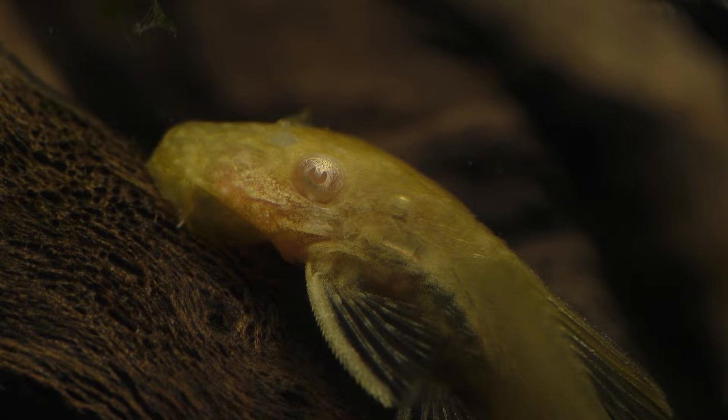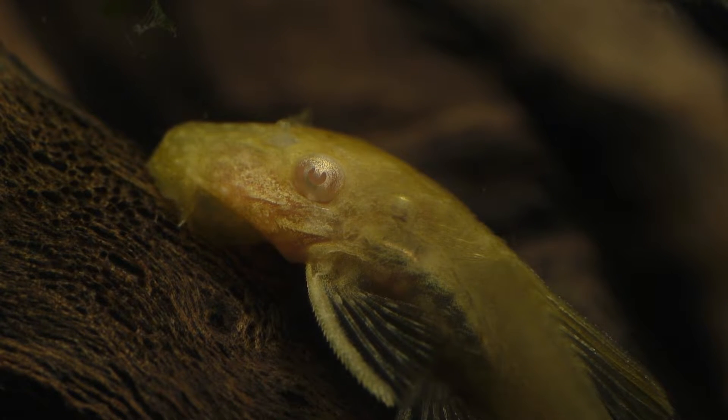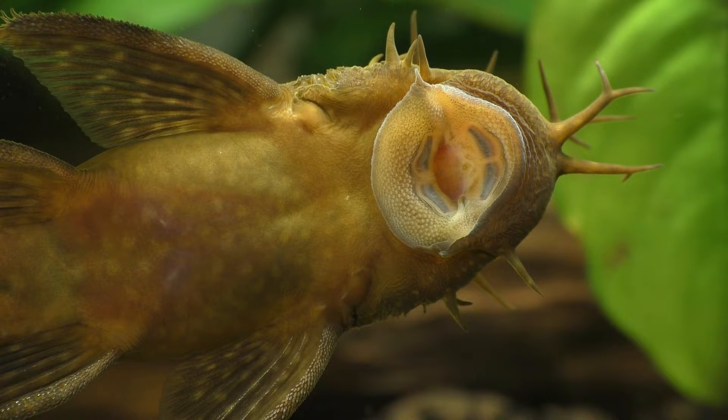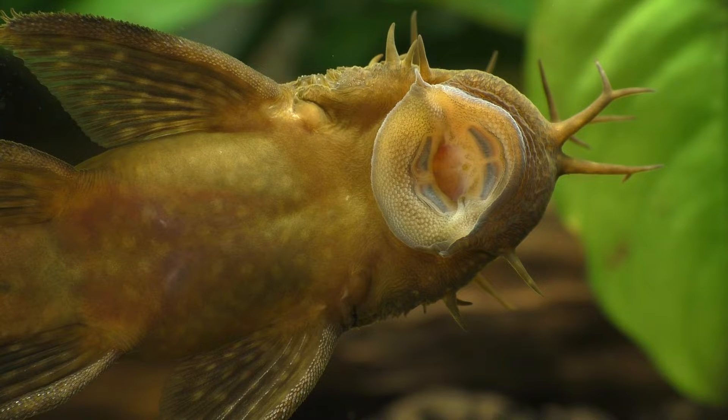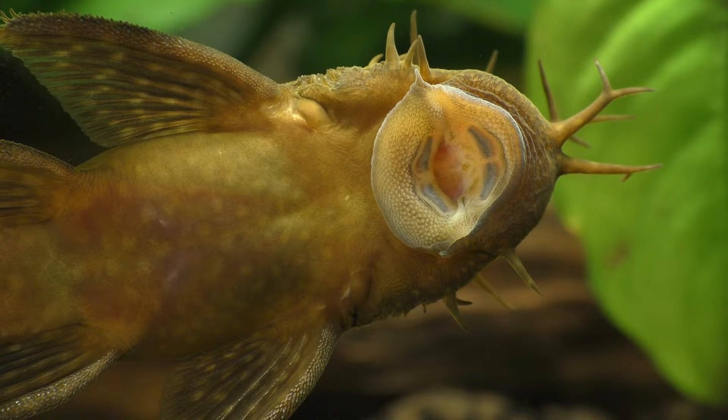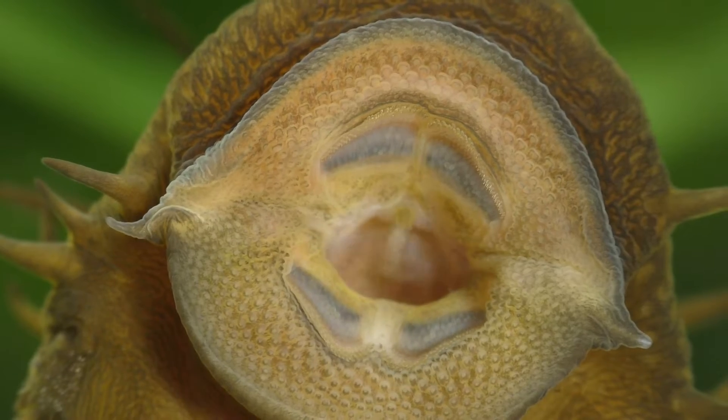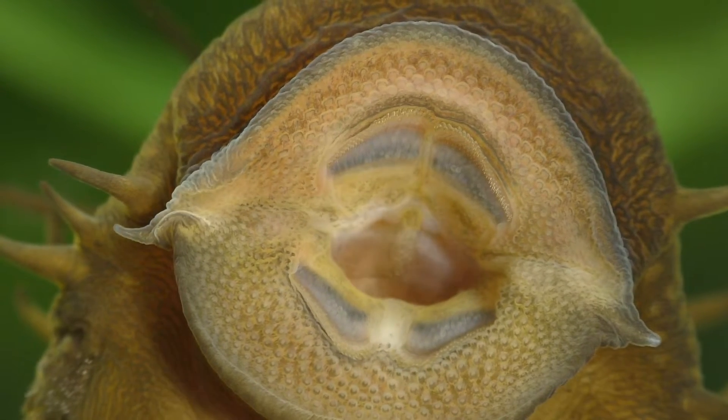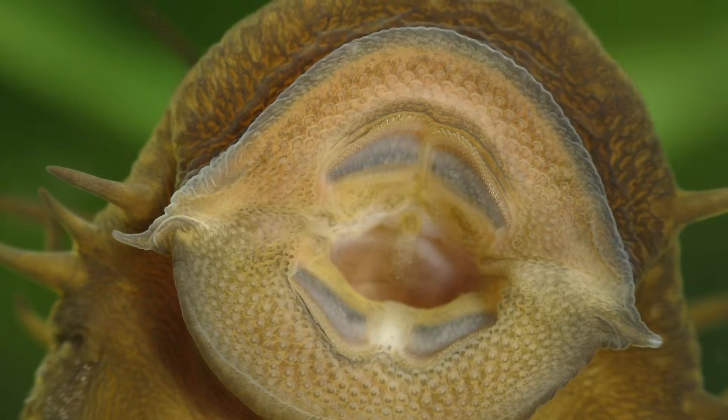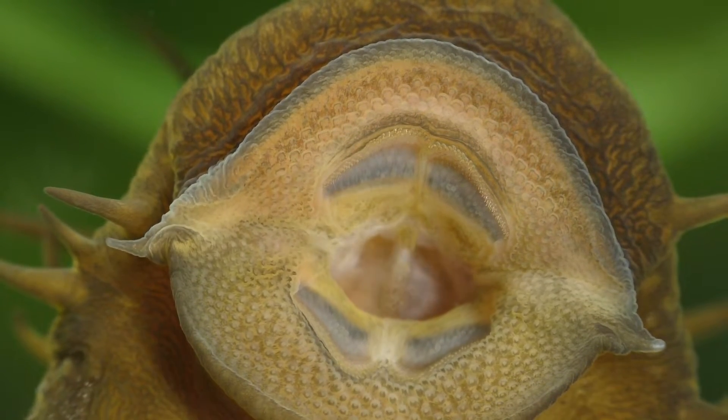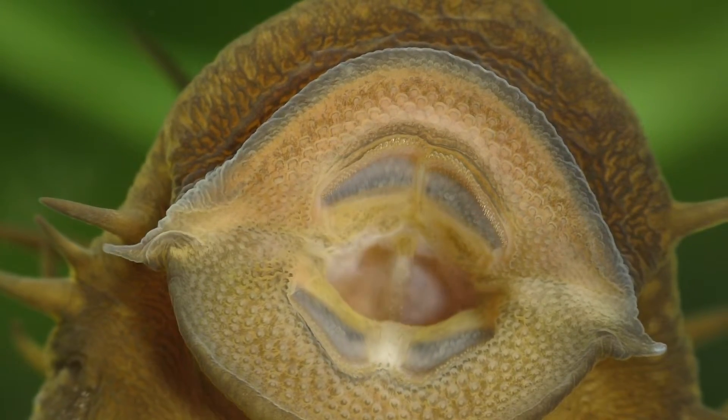Could these bristlenose plecos be convinced to climb up the glass and out of the water if a steady stream of water was running down the glass? Obviously, the mouth of a bristlenose is very effective for clinging to the glass while submerged, but I wondered how effective their suction would be above the waterline. Could a bristlenose pleco use its mouth to climb out of the water? This question led me to design an experiment to test their climbing skills.